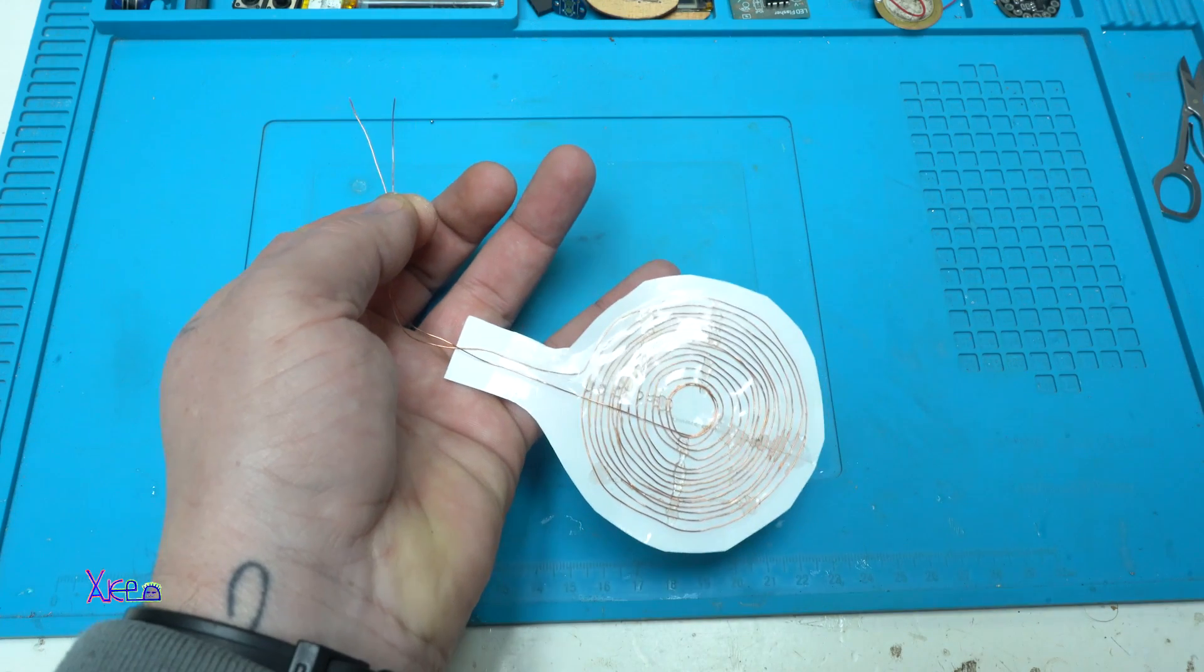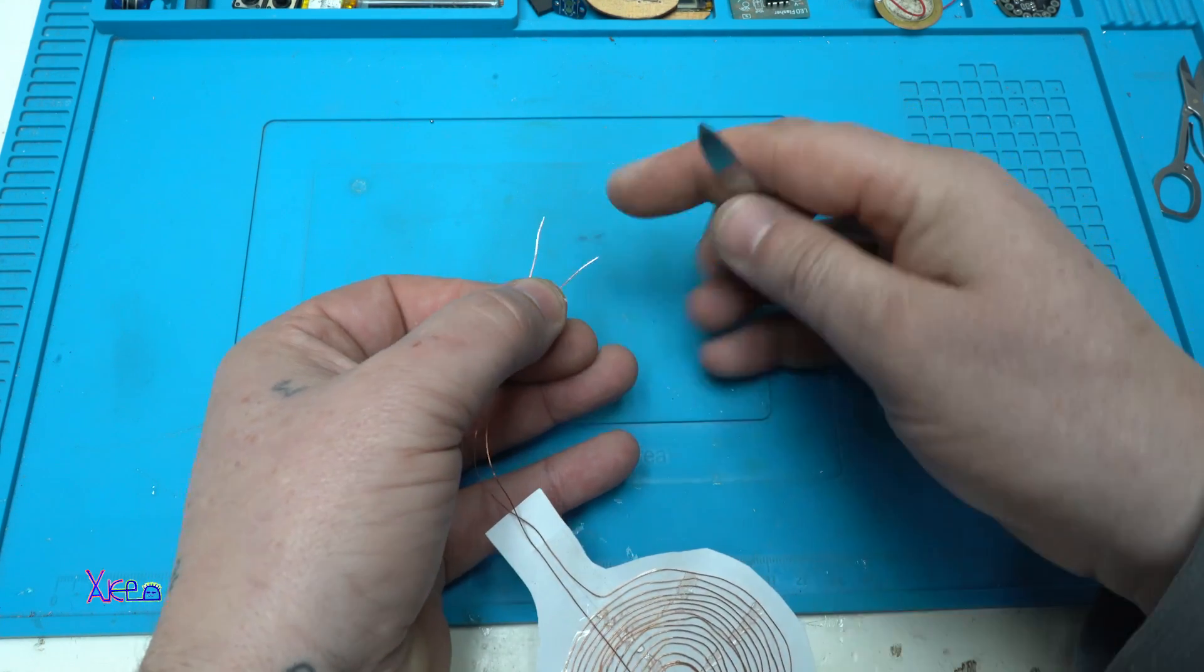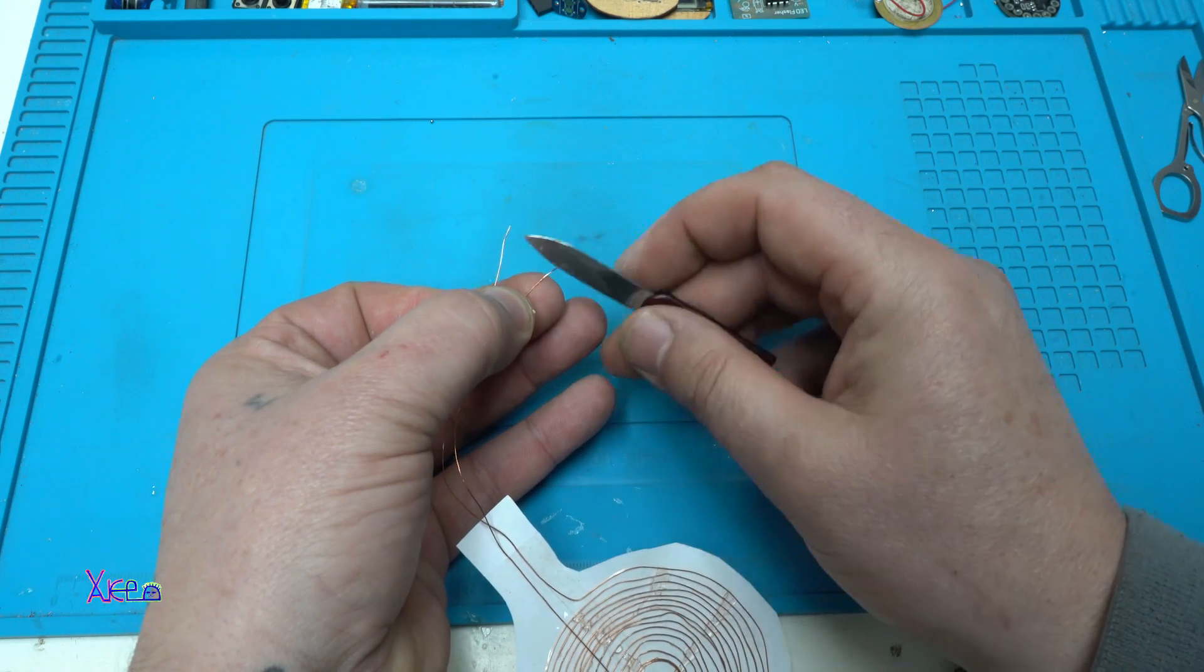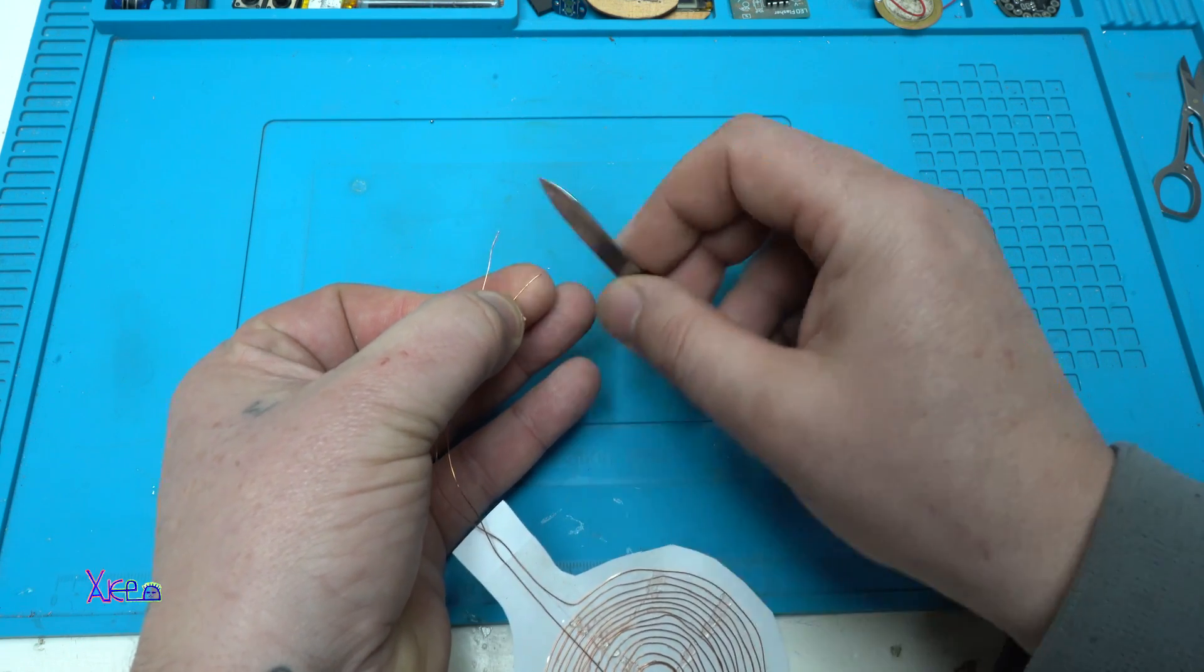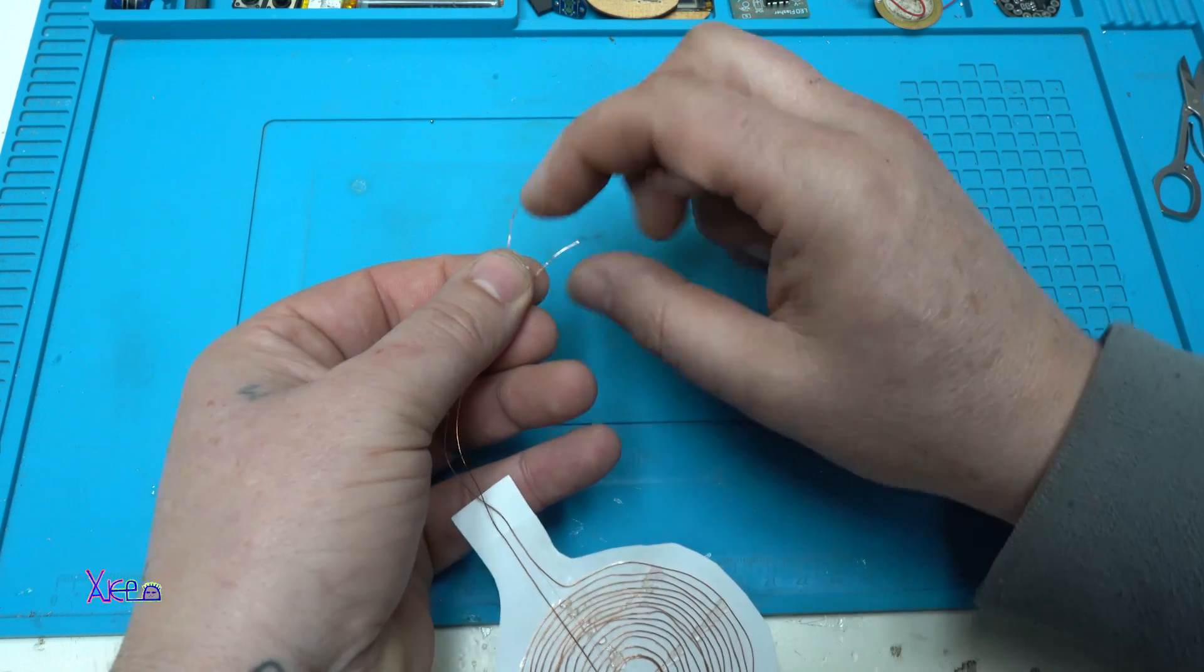Before connecting the speaker to the amplifier, these wires need to remove the isolation. You can do that with a knife or sharpie.